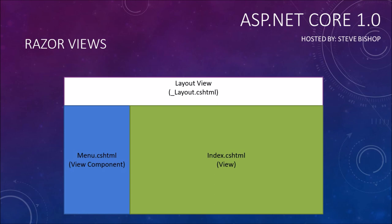Additionally, there can be view components, like we see on the left-hand side with the menu — and we'll talk about view components a little bit later in this course. On the right-hand side, the actual view — the Index.cshtml or the CustomerList.cshtml or whatever view was called by the controller — will be placed inside the area designated inside of the layout. It's these layout views that allow us to have very similar content held across all the different pages without having to rewrite that code for every single view.